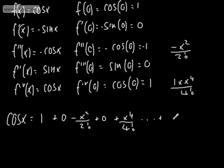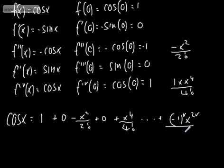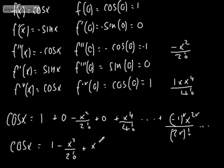The general term for cos x is minus 1 to the r times x to the 2r over 2r factorial. So in general, cos x equals 1 minus x squared over 2 factorial plus x to the 4th over 4 factorial, and so on. That's your general expansion, and it's valid for all values of x.